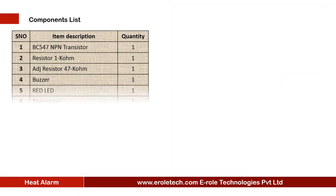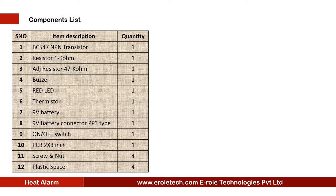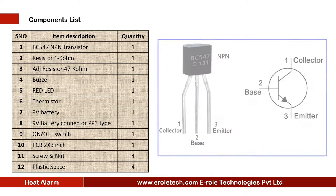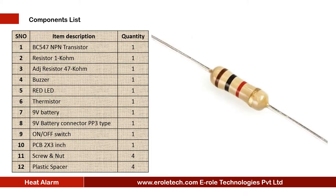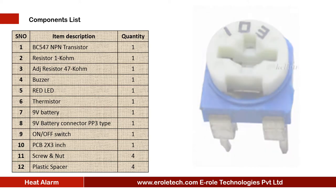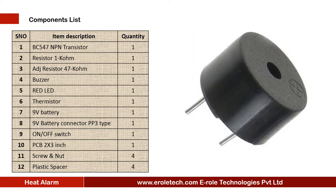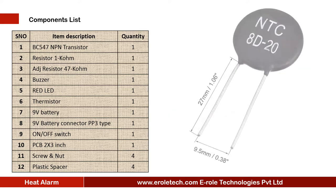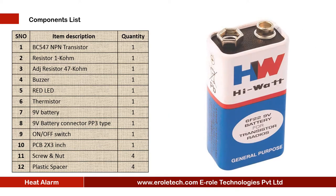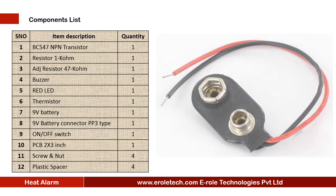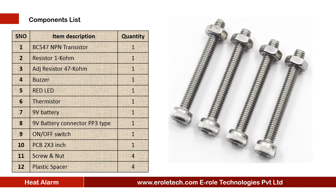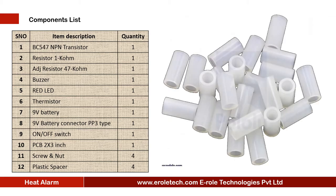These are the components needed for this project: one NPN transistor BC547, one 1 kilohm resistor, one 47 kilohm variable resistor, one buzzer, one red LED, one NTC type thermistor, a 9 volt PP3 battery with battery connector, an on/off rocker switch, one zero PCB, four screws with nuts, and four plastic spacers.